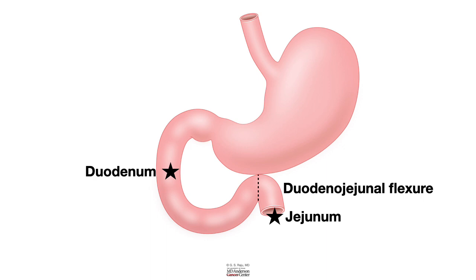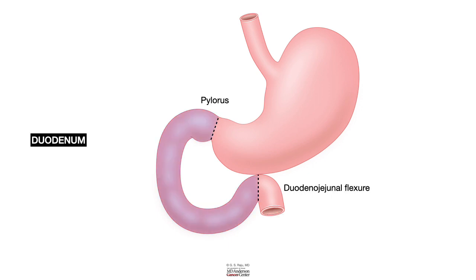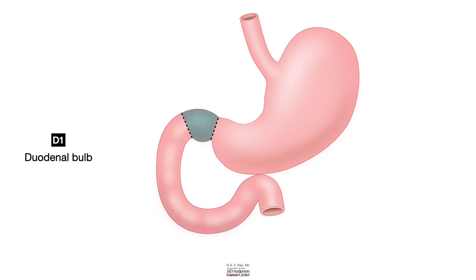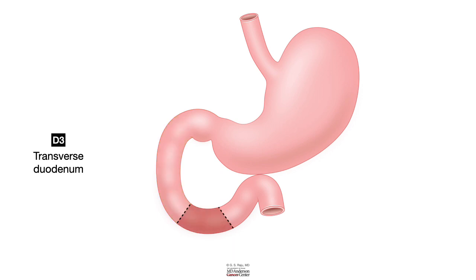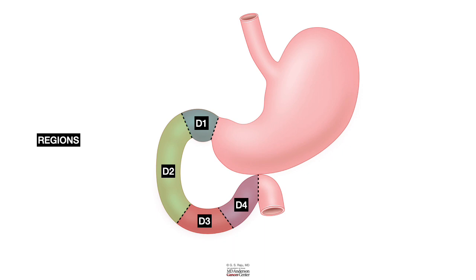The duodenum starts after the pylorus. It has the shape of a C loop and has different sections. The first section after the pylorus is known as the duodenal bulb or D1. The next section that goes down is the descending duodenum or D2. The one that goes across the abdomen transversely is the transverse duodenum or D3. Finally, it goes up before joining the jejunum — that is the ascending duodenum or D4.